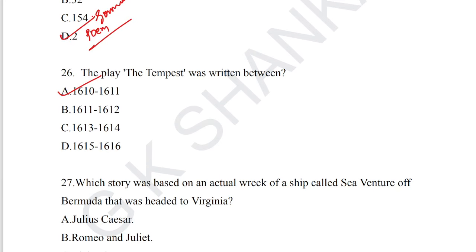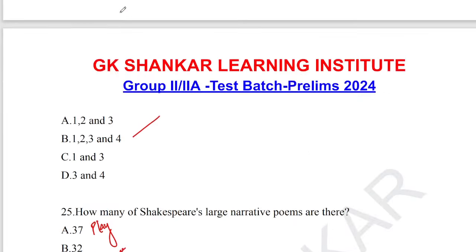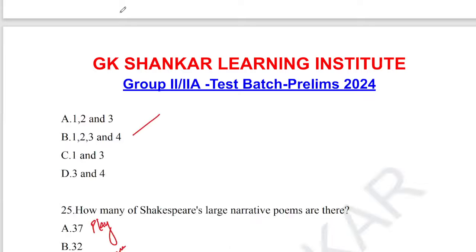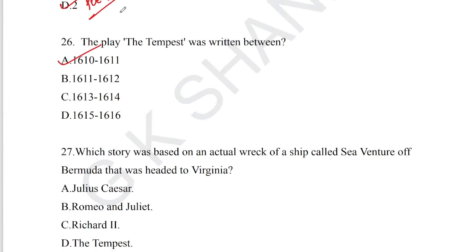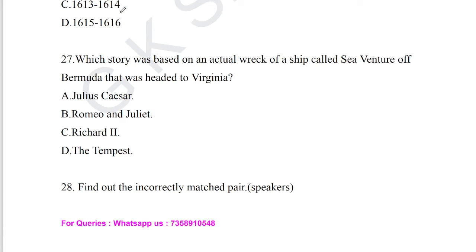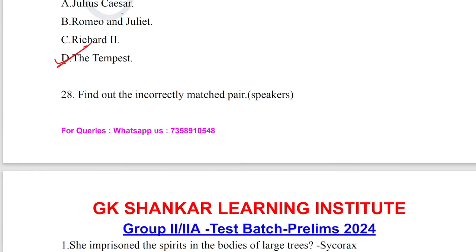Question number 26: the play 'The Tempest' was written between 1610 to 1611 by William Shakespeare, who was an English poet, playwright, actor, and dramatist. Question number 27: which story was based on the actual wreck of a ship called Sea Venture of Bermuda that was headed to Virginia? The answer is 'The Tempest.'